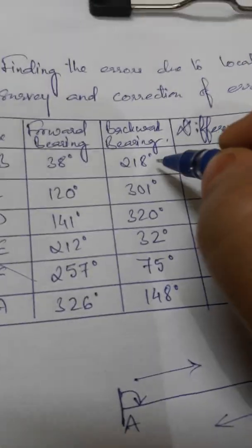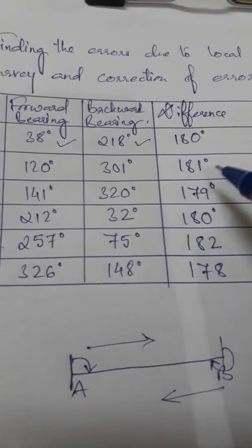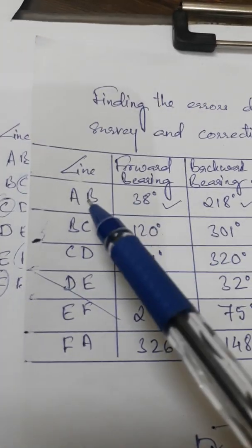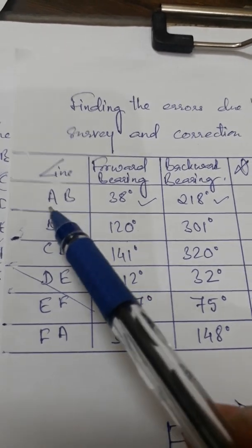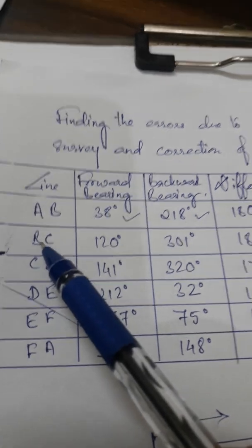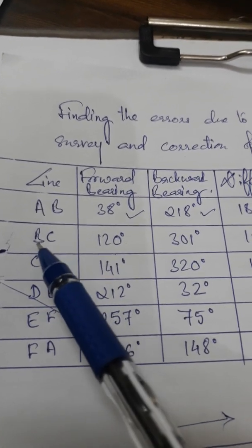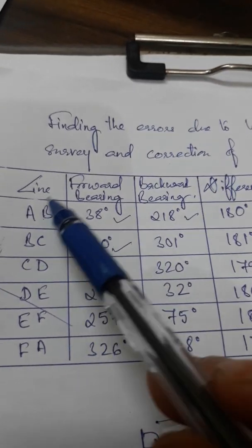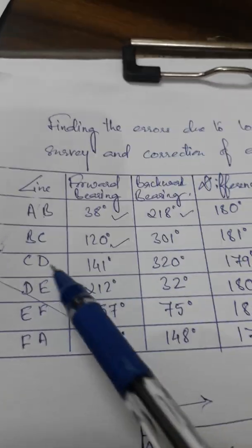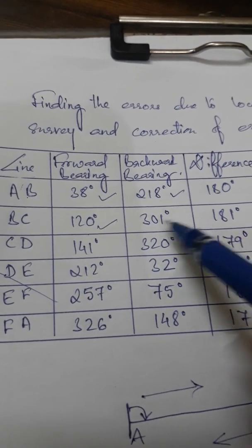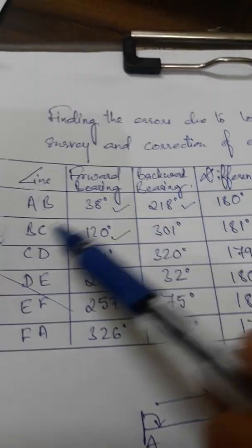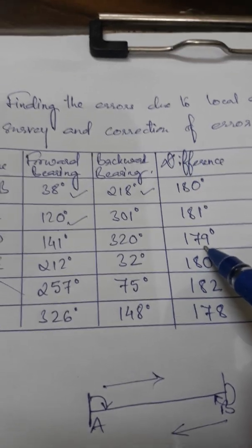The next difference is 181 — meaning either the forward or backward bearing of BC can be wrong. Since from line AB the reading taken from B to A was correct, we consider that B was correct. Therefore the forward bearing from B to C is also considered correct, and point C may have some error.